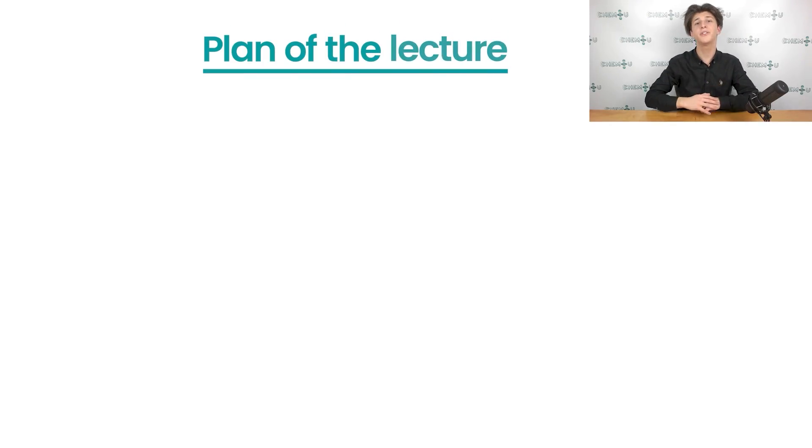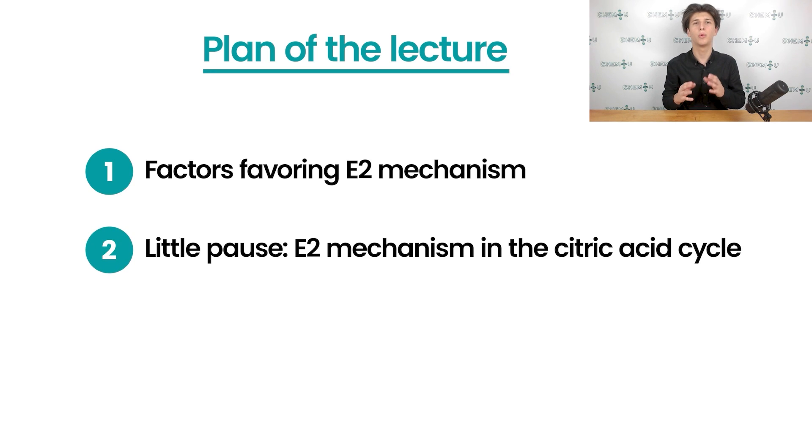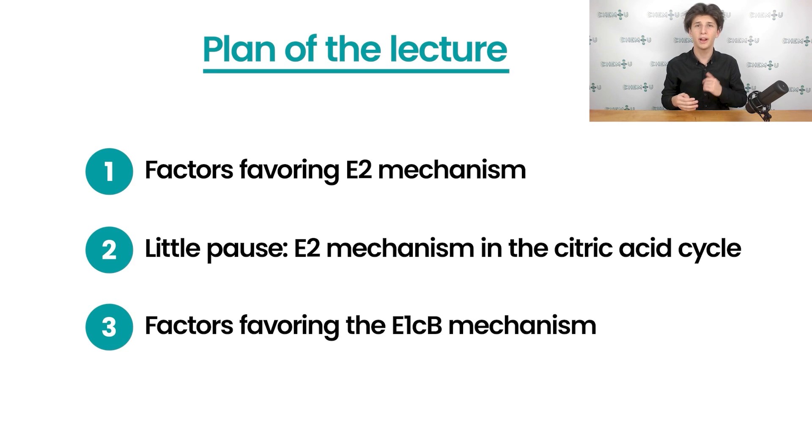First, we will continue our discussion from the previous video about the influence of different factors on the elimination mechanisms and we'll evaluate it for the E2 and E1Cb mechanisms. After that we'll have a little pause so we will explore one beautiful example of the E2 mechanism that takes place in the famous citric acid cycle. Finally, we'll learn how carbanion stability, leaving group ability, the polarity of solvents and base concentrations influence the E1Cb mechanism.